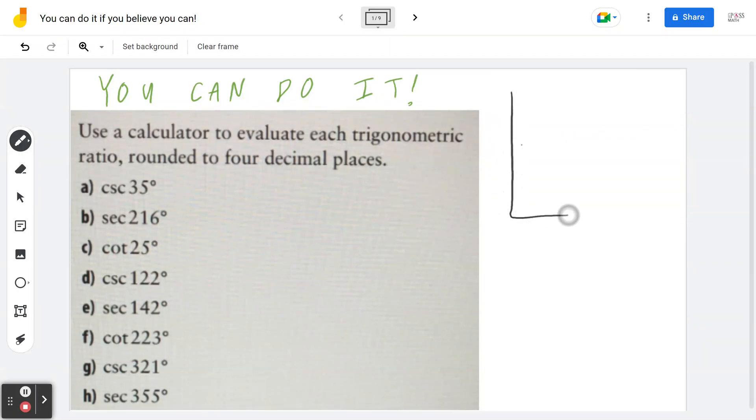Step number one, make sure with your scientific calculator you are in degree mode. And of course, depending on the calculator, it might say DEG, it may even say D, it might say degrees, but it's really important that you're in degree mode.